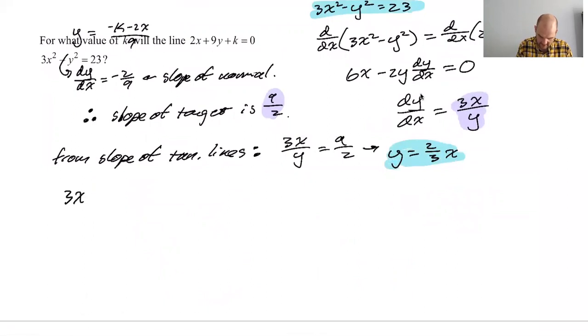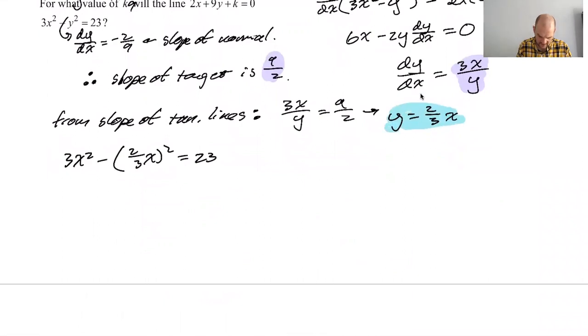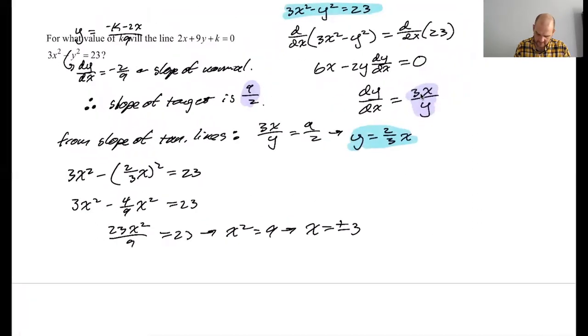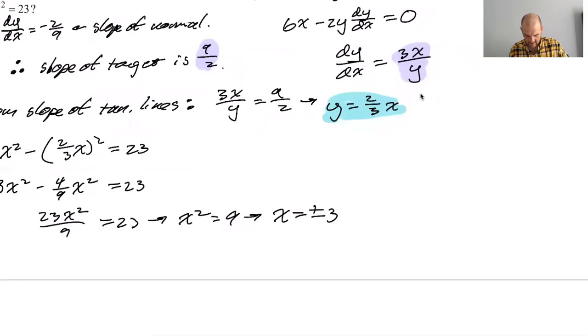So I'm going to take this relationship. I'm going to sub it in here. This is an advanced, this is why it's part B, I guess. So now I have three x squared minus y squared. So minus two thirds x squared equals 23. I assume this is going to work out really nicely somehow. But four ninths x squared, 27 minus four is 20. So x squared equals nine. So x equals plus or minus three. Good. There's two of them. I was hoping for that.